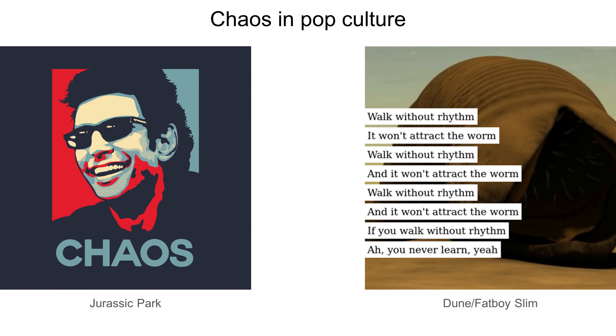Chaos exploded onto the pop culture scene in the 90s with Jurassic Park, first the book by Michael Crichton, and then the movie by Steven Spielberg. How much the events in the story actually have to do with chaos theory is another story for another time, but thanks to Jeff Goldblum's portrayal of the mathematician Ian Malcolm, some awareness of chaos theory is now embedded in society's collective consciousness. The concept of chaos as the absence of rhythm also appears in Dune, where you have to walk without rhythm if you want to avoid attracting the attention of the sandworms. And a reference to this also appears in the song Weapon of Choice by Fatboy Slim.